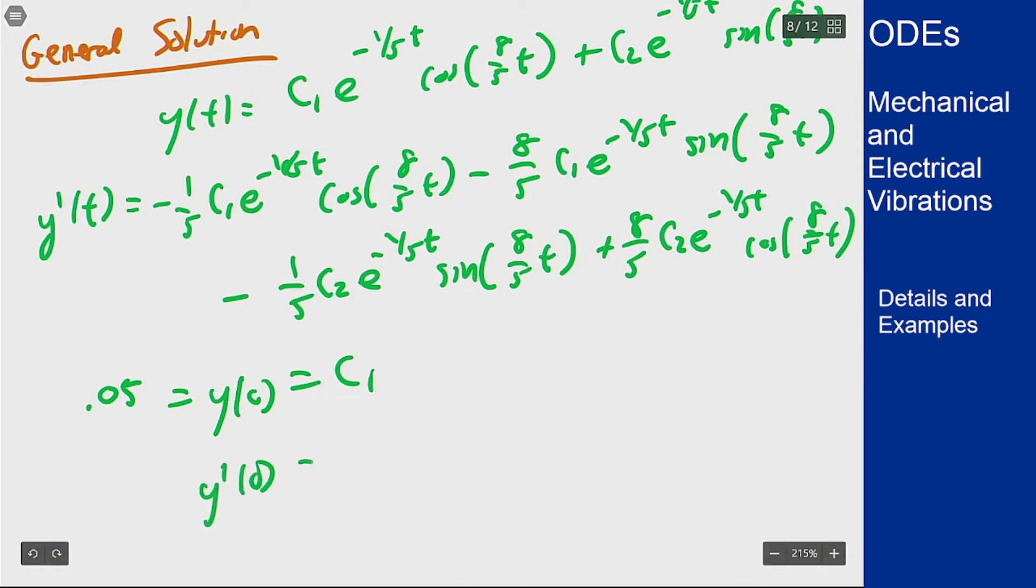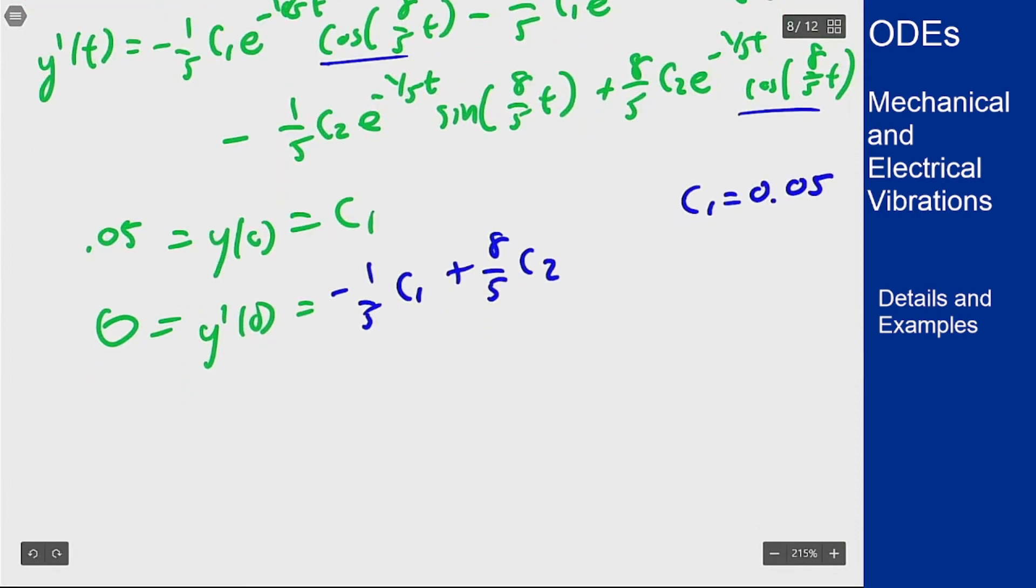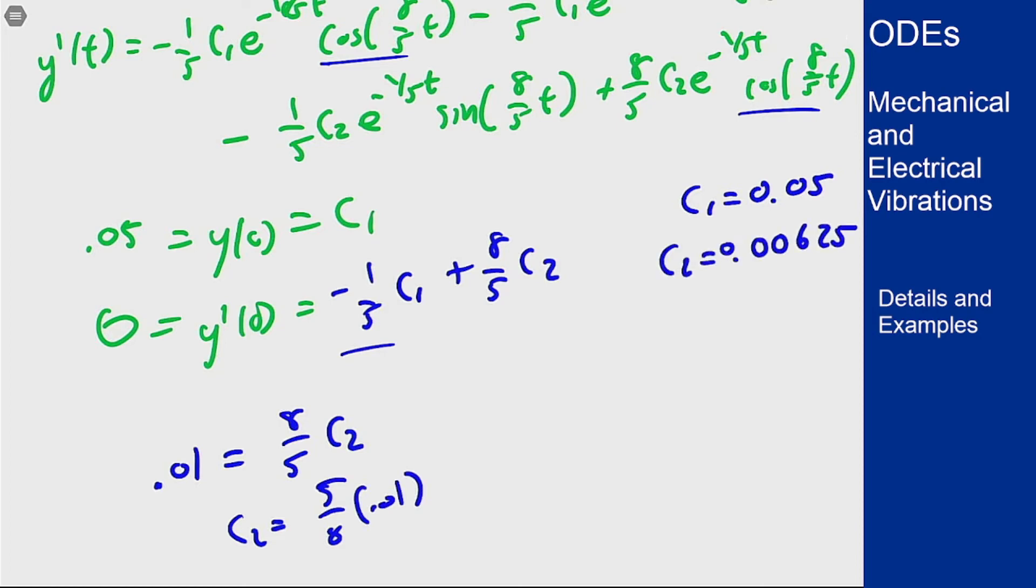And then for y prime of 0, I get this should be 0 and when I plug in 0 here both of the sine terms are going to vanish. I'll be left with a negative 1 fifth c1 plus an 8 fifths c2 from the two cosine terms that are left. This tells me that c1 is 0.05 and c2 I can find because if I add this term over I will get 0.01 equals 8 fifths c2 so c2 is 1 eighth times 0.01 or 0.00625, or if you want fraction forms this will be 1 over 20 and this will be 1 over 160.